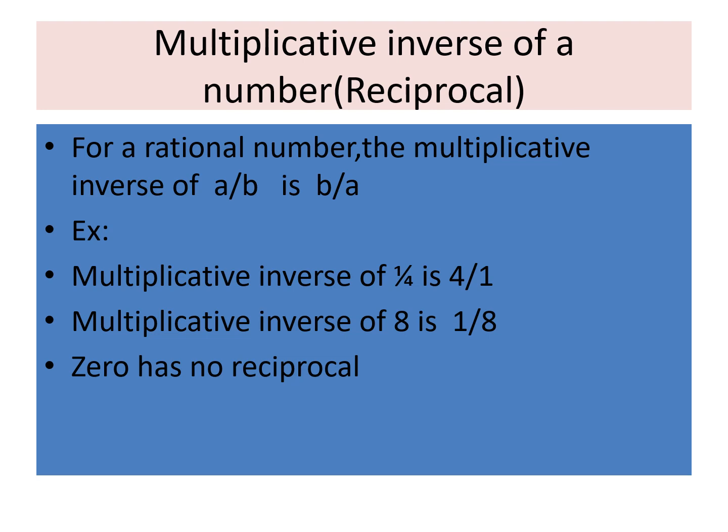The multiplicative inverse of a number is its reciprocal. For a rational number a/b, the multiplicative inverse is b/a — the sign stays the same. For example: the multiplicative inverse of 1/4 is 4; the multiplicative inverse of −2/3 is 3/(−2); the multiplicative inverse of 8 is 1/8. Note that 0 has no reciprocal because 1/0 is undefined.